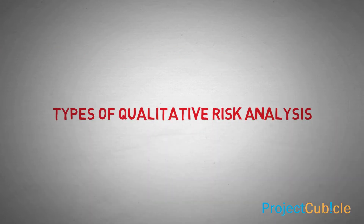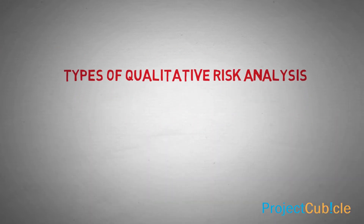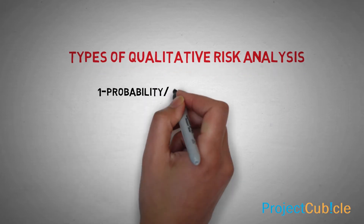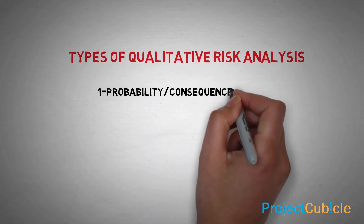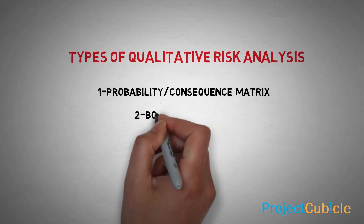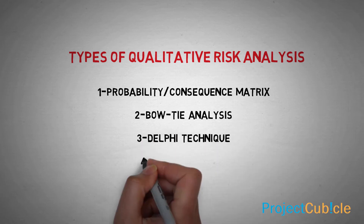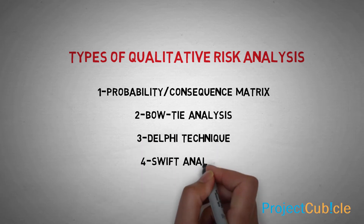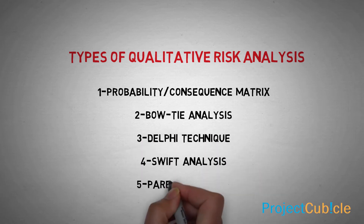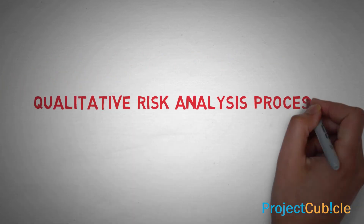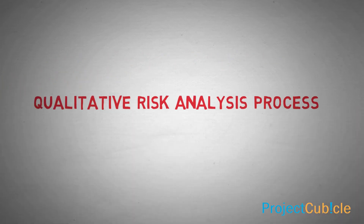The five most common types of qualitative risk analysis are: one, probability consequence matrix; two, bow tie analysis; three, Delphi technique; four, SWIFT analysis; five, Pareto principle.